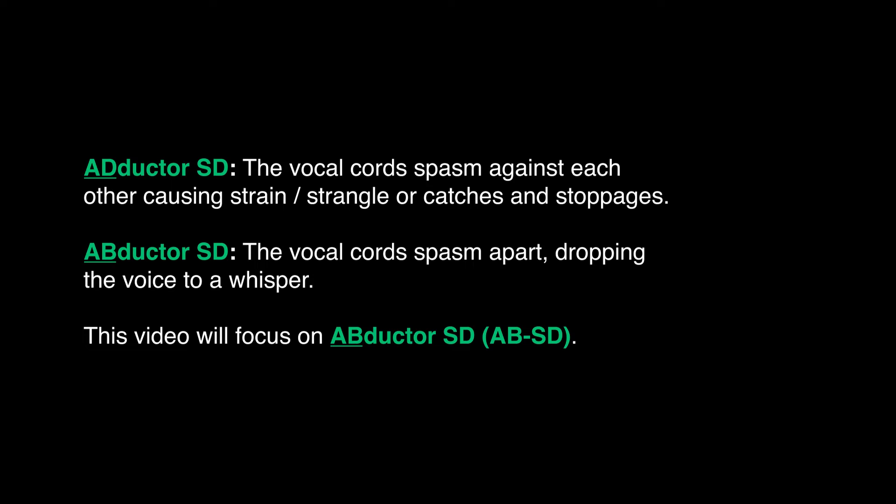In adductor spasmodic dysphonia, the vocal cords spasm against each other causing strain, a strangling sound, or catches and stoppages. In abductor spasmodic dysphonia, the vocal cords spasm apart, dropping the voice to a whisper. This video will focus on abductor — that's the intermittent whisper form of spasmodic dysphonia.